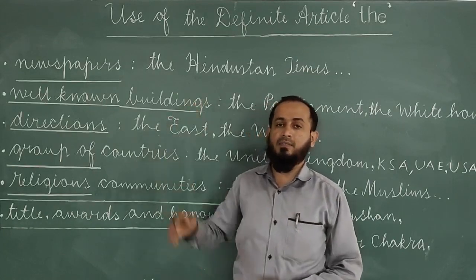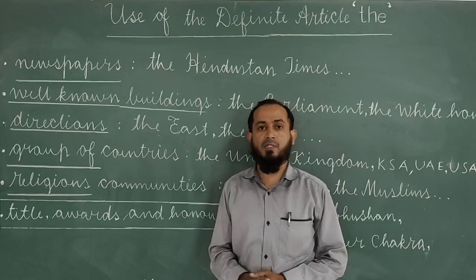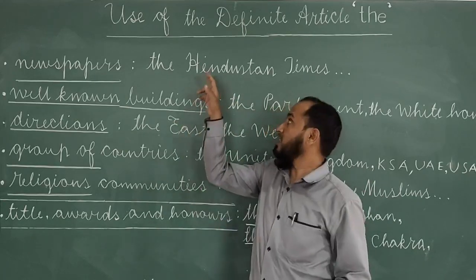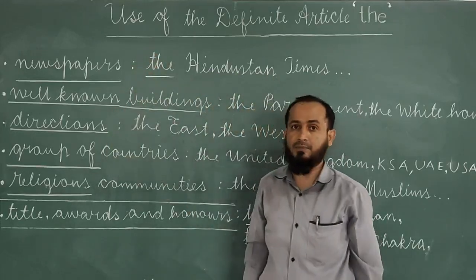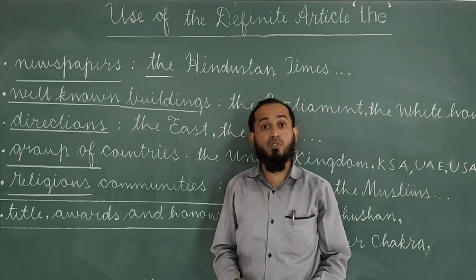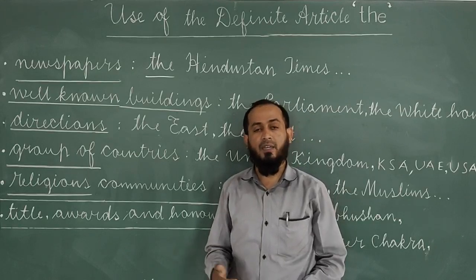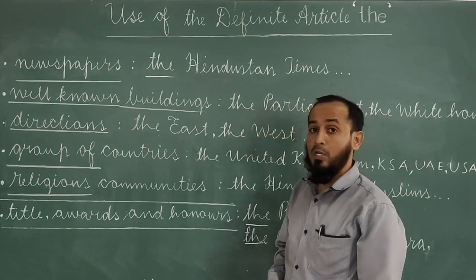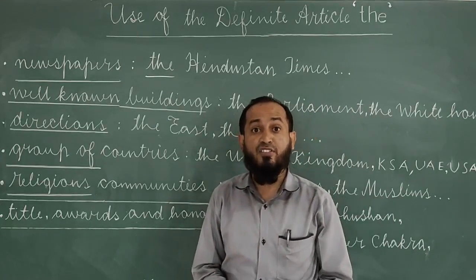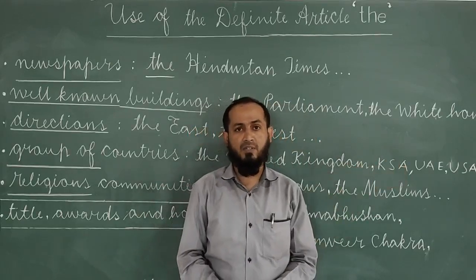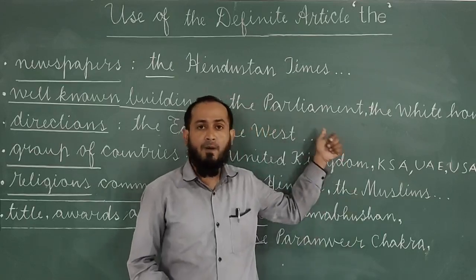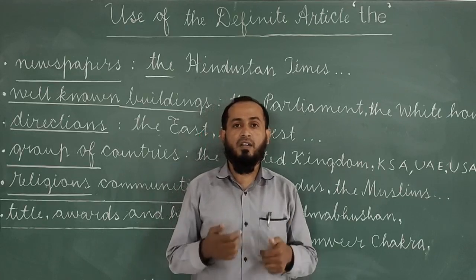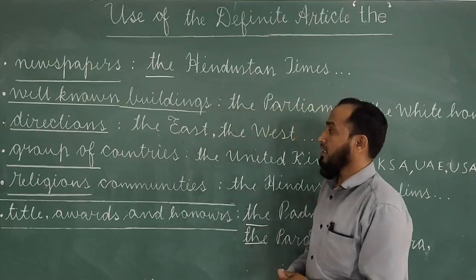Next: 'the' is used before the names of newspapers. For example, 'Hindustan Times' is a newspaper — we write 'the Hindustan Times'. More examples: The Times of India, The Hindu, The Hitvada. Also, 'the' is used before well-known or famous buildings — for example: the Parliament, the White House, the Taj Mahal, the Charminar, the Qutub Minar, the Red Fort.